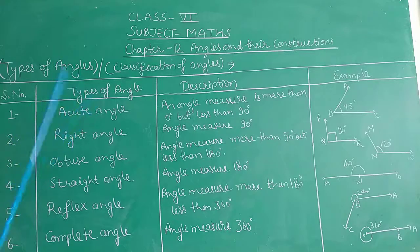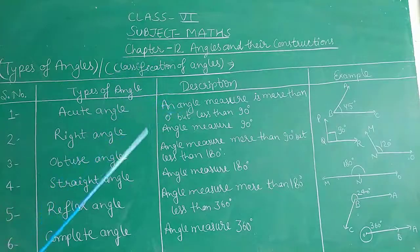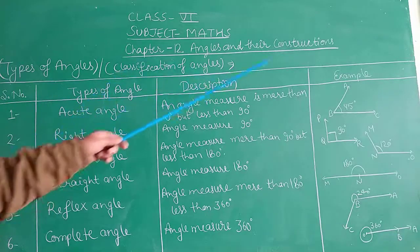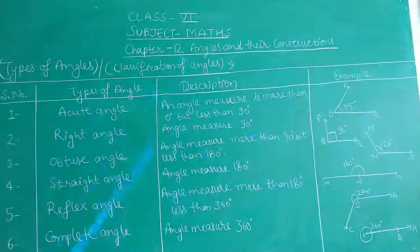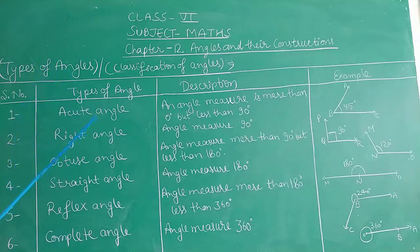An acute angle is measured greater than 0 and less than 90 degrees. We can also observe in the figure: 45 degrees, 60 degrees, 75 degrees, and 30 degrees are all examples of acute angle, which is measured less than 90 degrees.